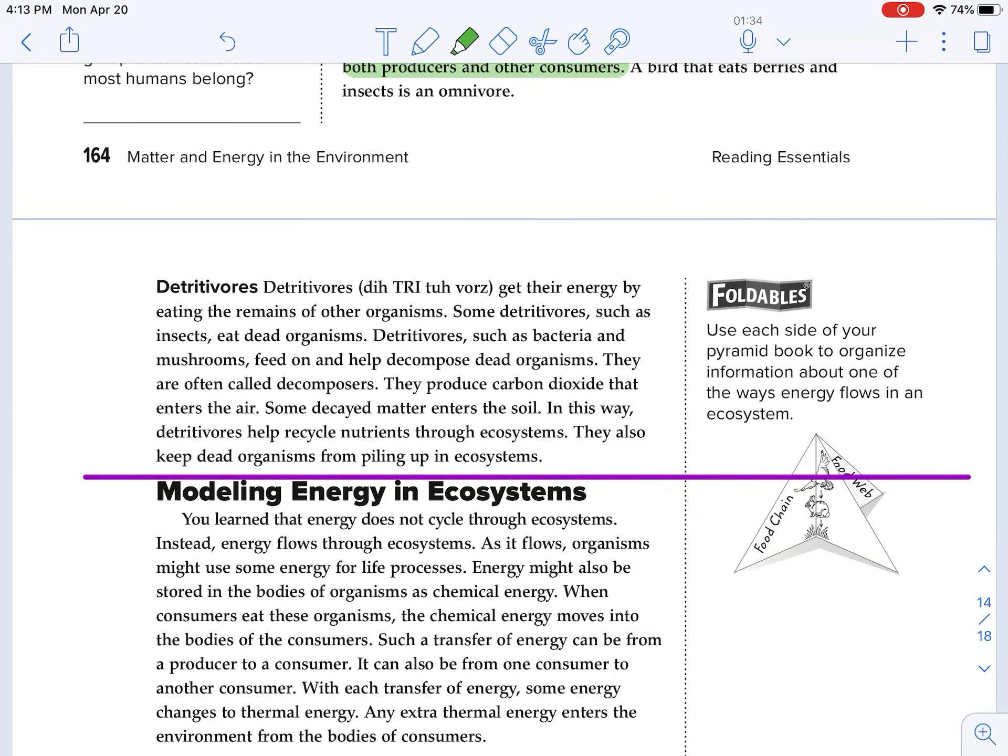Detritivores get their energy by eating the remains of other organisms. Some detritivores, such as insects, eat dead organisms. Detritivores, such as bacteria and mushrooms, feed on and help decompose dead organisms. So this is the idea. These are also known as decomposers. They're super important with that nitrogen cycle and that carbon cycle because they're going to break down dead organisms. They feed on dead organisms and release the energy back into the soil, release the carbon and the nitrogen back into the soil.